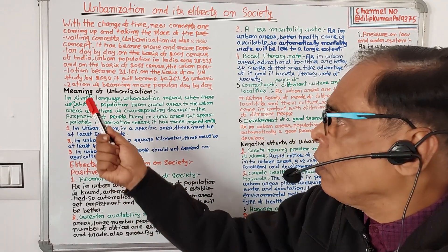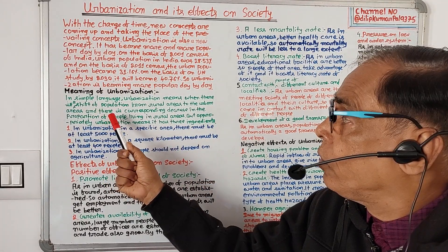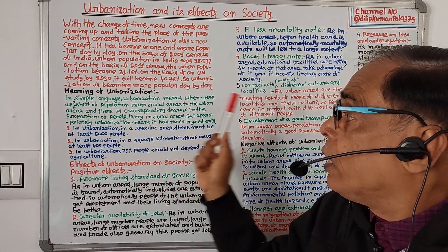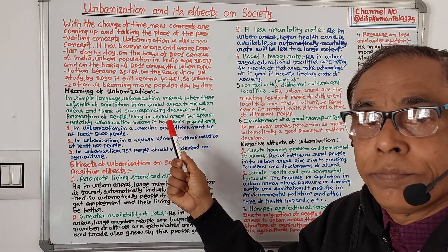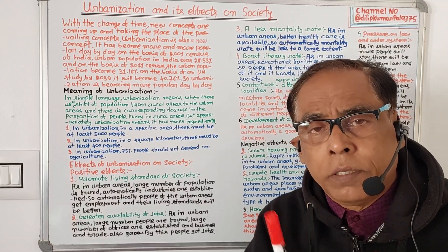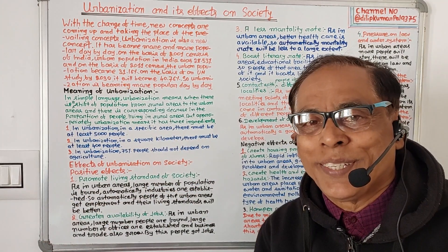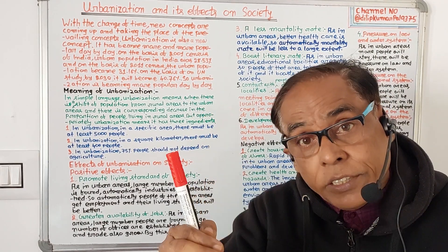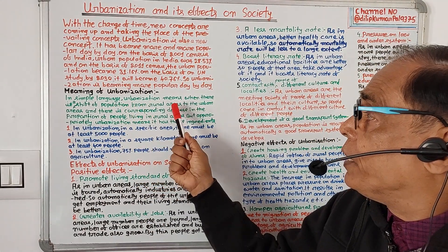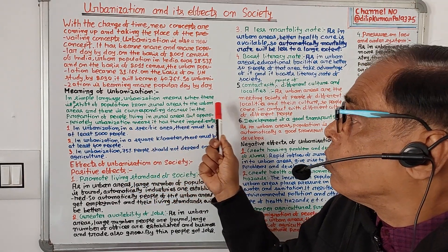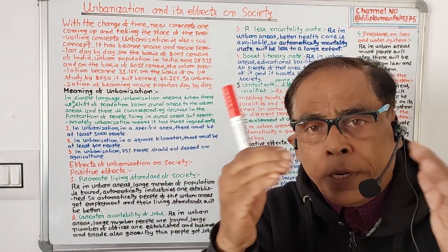So what is the meaning of urbanization? In simple language, urbanization means when there is a shift of population from rural area to urban area, and there is a corresponding decrease in the proportion of people living in rural area. In simple terms, urbanization means the flow of people from rural area to urban area with a corresponding decrease in the rural population.